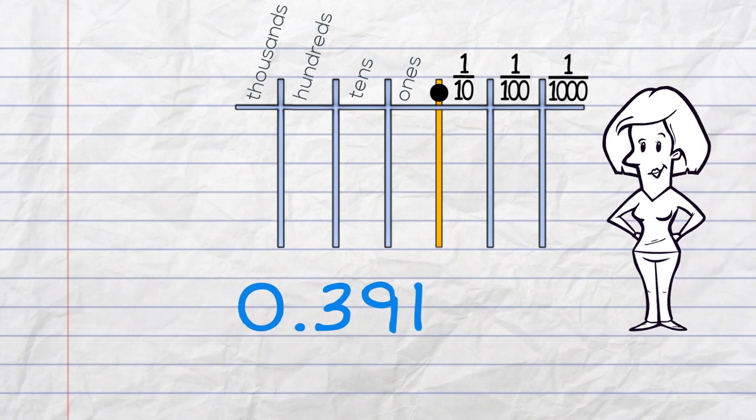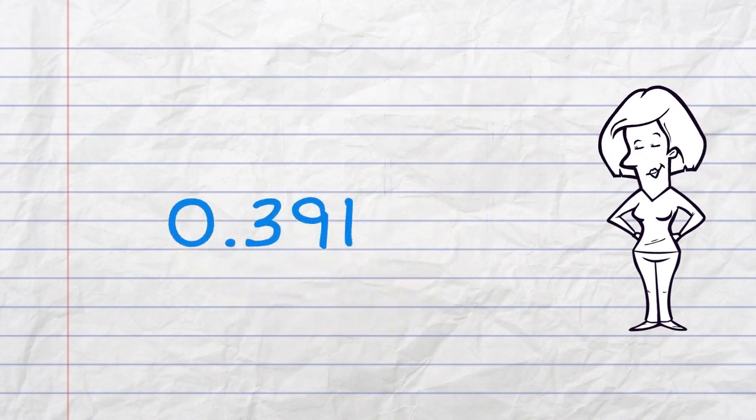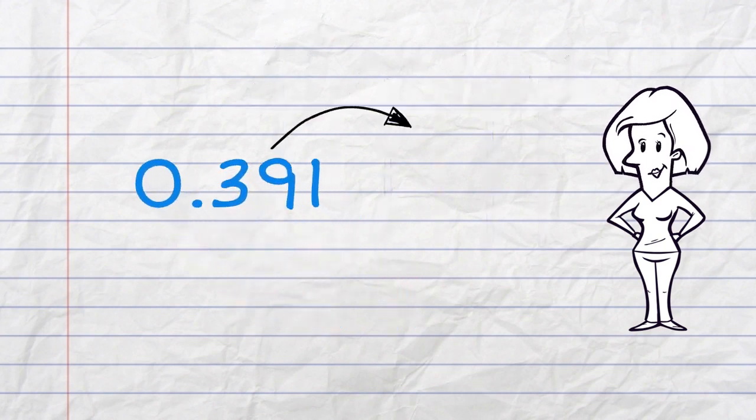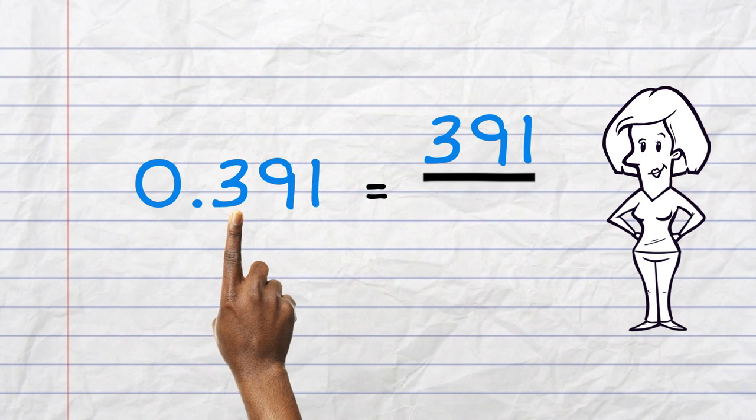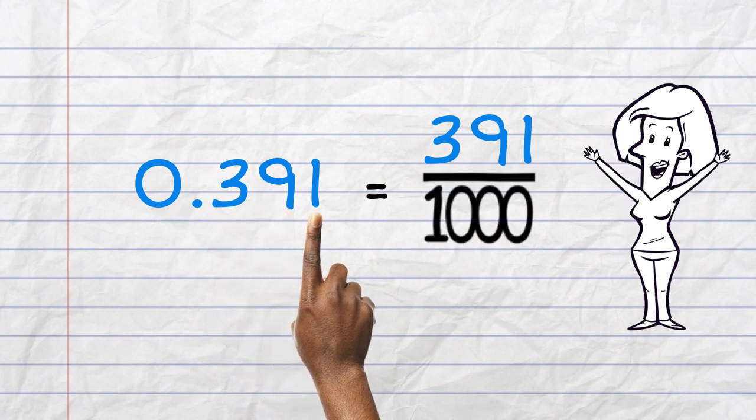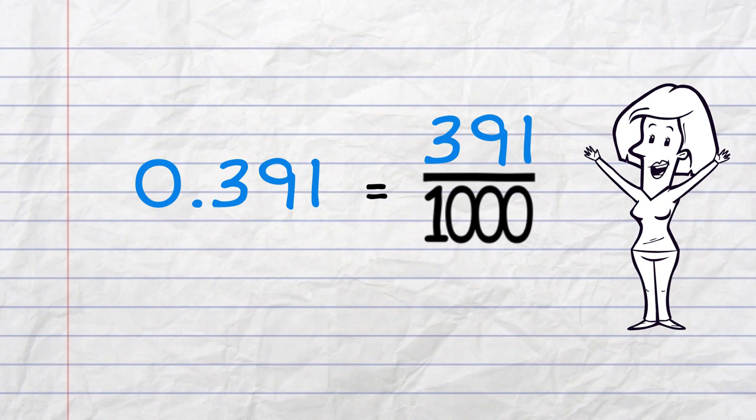Here, we've got three figures after the decimal point. We don't even really need to use a chart at all, do we? 391 is our numerator. Just name the columns to find the denominator. Tenths, hundredths, thousandths. 391 over 1000.